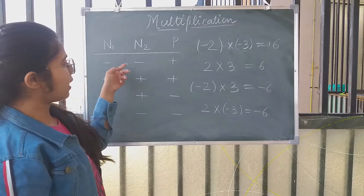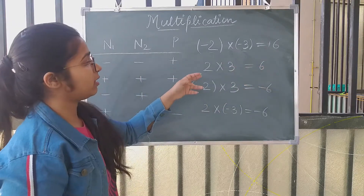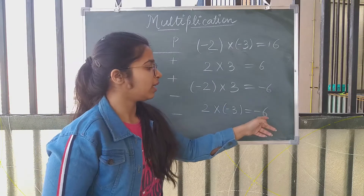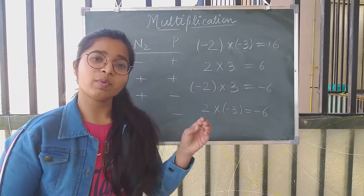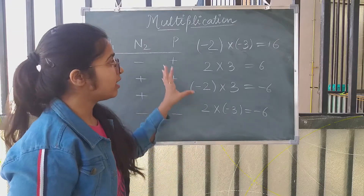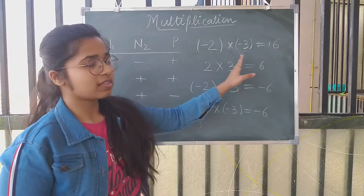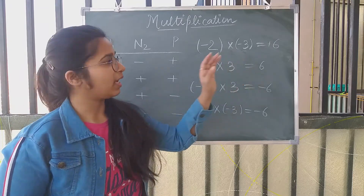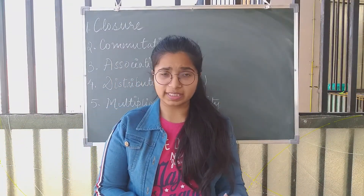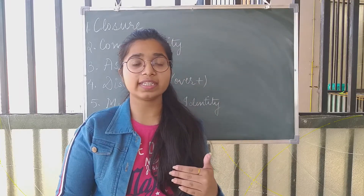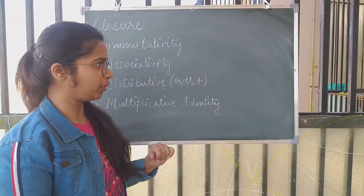Whenever the signs are the same, you will get a positive result. Whenever the signs are opposite, you will get a negative result. You have to multiply them normally, taking the numbers as whole numbers, and then fix the sign afterwards based on what signs the given numbers have. After studying how to multiply two integers, let's study whether multiplication satisfies all these properties.